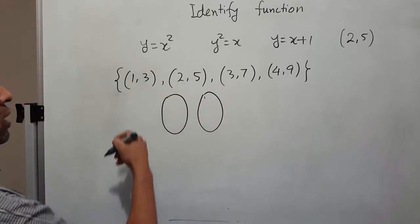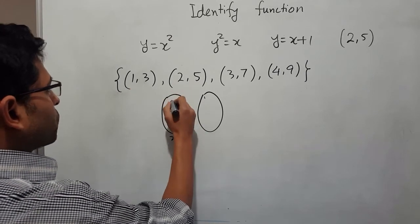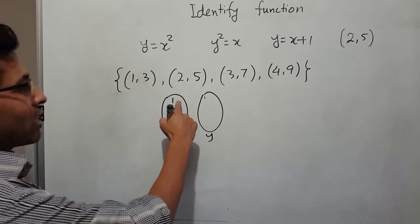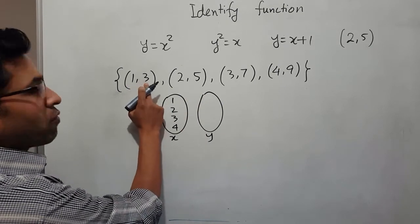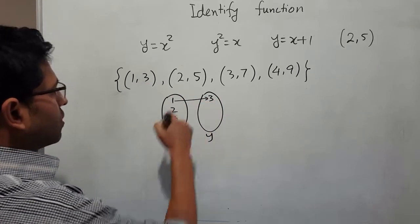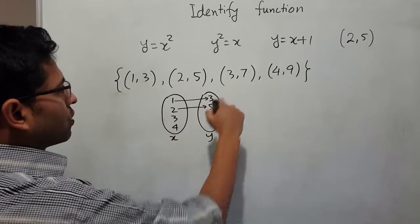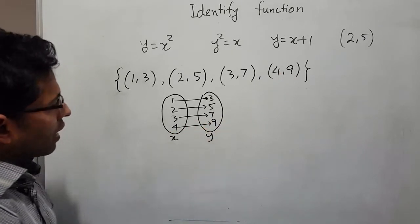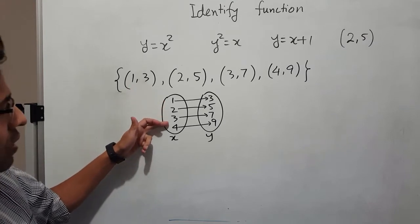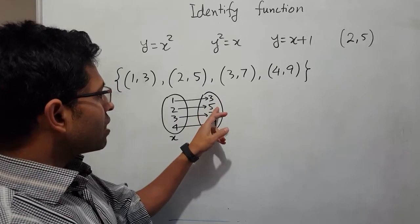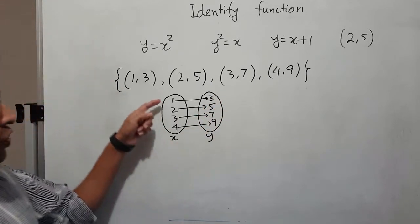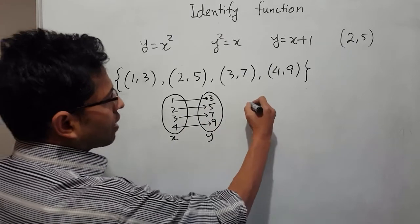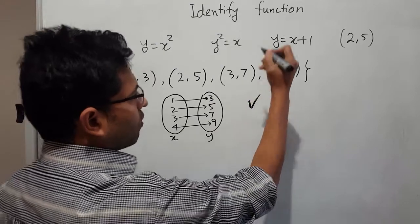We put the x-values 1, 2, 3, and 4 on one side, and show the associated y-values on the other. For x=1 we have y=3, for x=2 we have y=5, for x=3 we have y=7, and for x=4 we have y=9. Each value of x is associated with exactly one value of y, so this is a function.